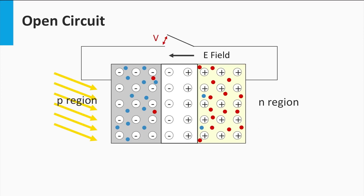However, no current is created when we open the electrical circuit. In that case, the dominant drift current of light-excited charge carriers will positively charge the p-region with holes and negatively charge the n-region with electrons. This charging creates an electric field opposite to the built-in electric field and reduces the net drift current again. The charging of holes in the p-region and electrons in the n-region will build up until both drift currents are in equilibrium, meaning the device does not generate a current but builds up an electric field.